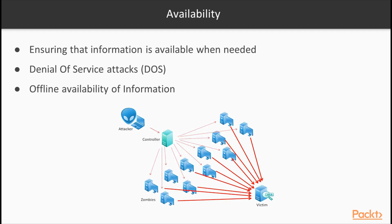Finally, it's important to talk about availability. In this section, we'll be talking about things like denial of service attacks. Even if your data is secured, if the system can be taken offline, then there is often a significant impact. Controls must be put in place to ensure that any particular system continues to provide the services it was designed to provide.